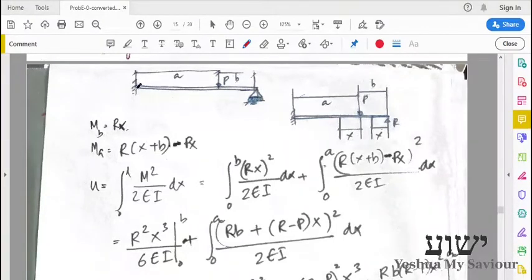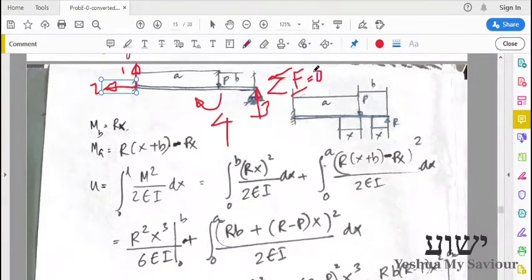You can see that in this problem at the built-in edge, if we draw support reactions, we have these three things and a moment. This is four unknowns. For any statics problem, the number of equations that we have is sigma F equals zero and sigma M equals zero. Here we have two equations plus one, so we have three equations and four unknowns. This is a statically indeterminate problem.